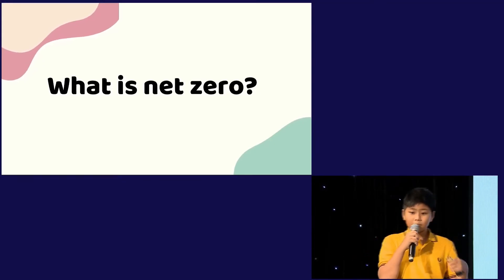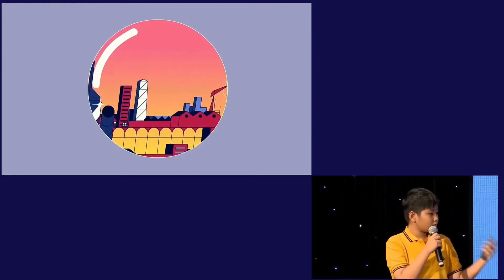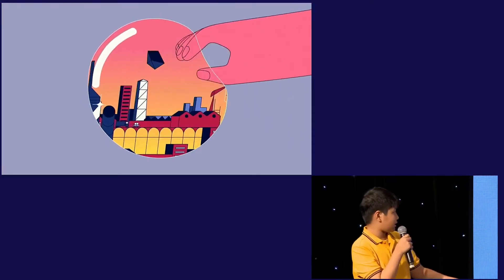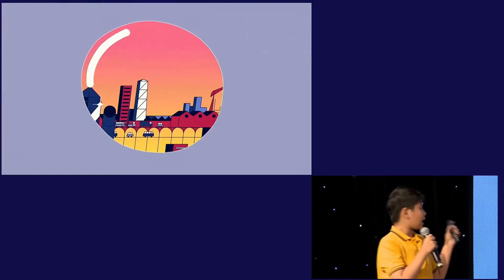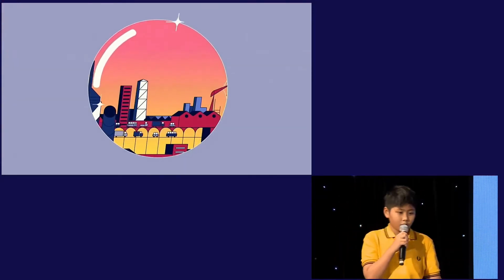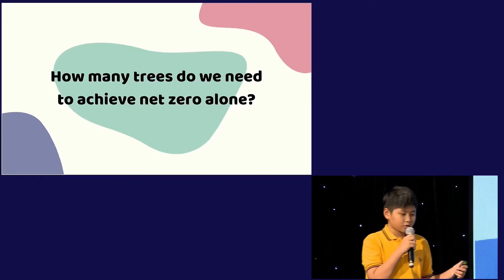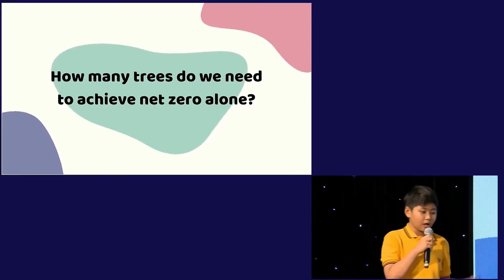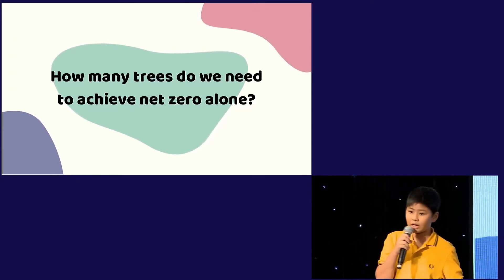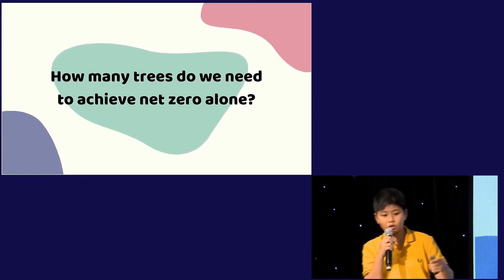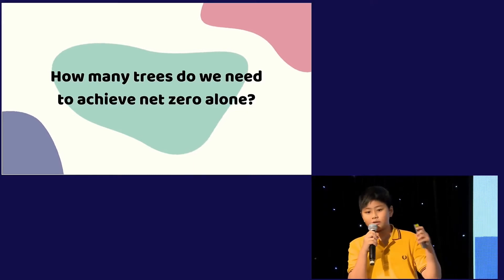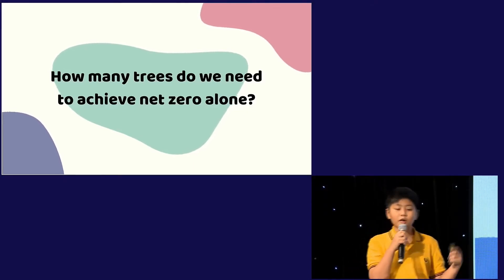But what is net zero? Every time we release a molecule of greenhouse gases, we take back a molecule of them, making our net emissions zero. But to cut down every source of greenhouse gases on every country is a big challenge. Planting trees will help, but trees alone can't help us to achieve net zero. For trees alone to help us achieve net zero, we will need every person to plant 730 trees. It's almost impossible.